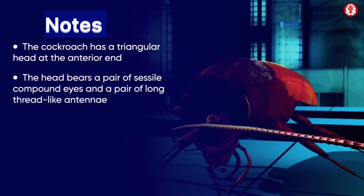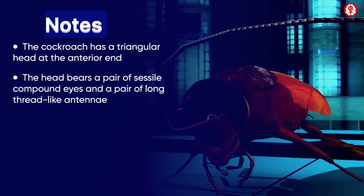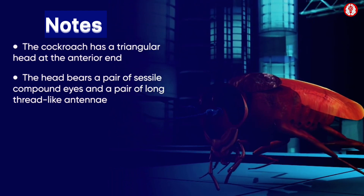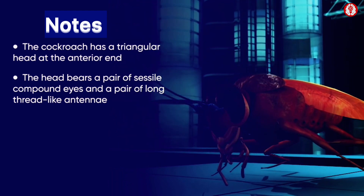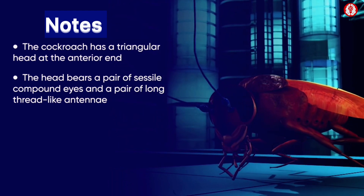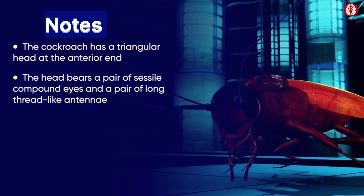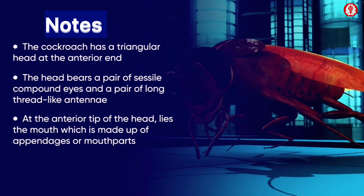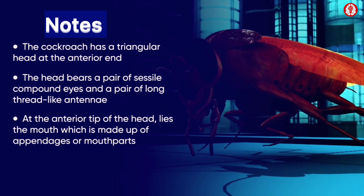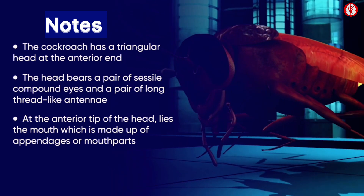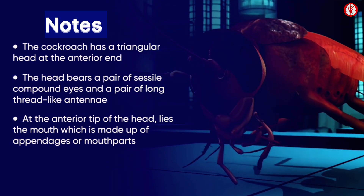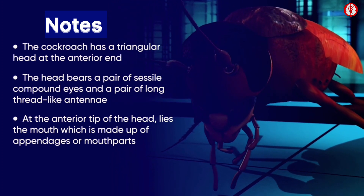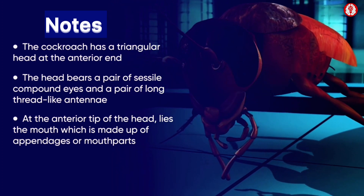The head bears a pair of sessile compound eyes and a pair of long thread-like antennae. At the anterior tip of the head lies the mouth, which is made up of appendages or mouthparts, which include a pair of mandibles and maxillae.